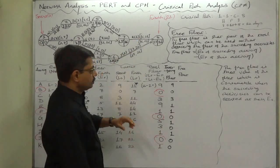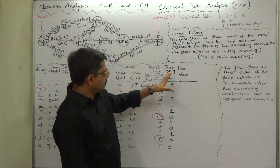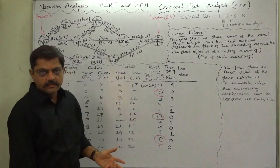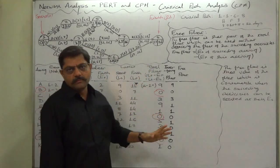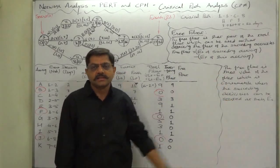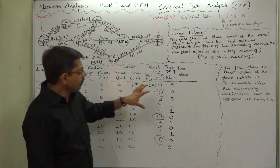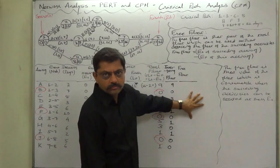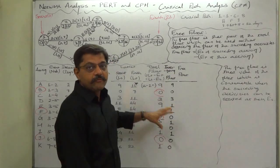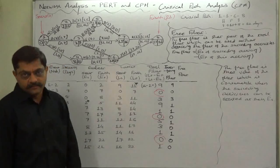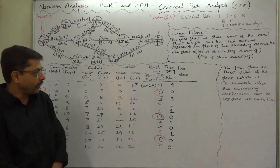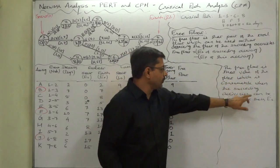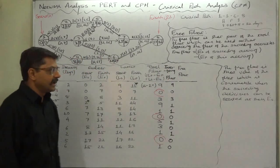In the previous lecture, while understanding the interfering float, we also discussed that using the float may affect the floats of other succeeding activities of the project. So which part of total float is available to consume without affecting the floats of succeeding activities? The free float is that value of the float which is consumable when succeeding activities can be started at their earliest start times.